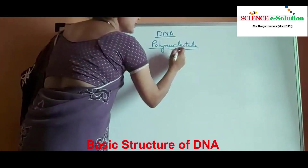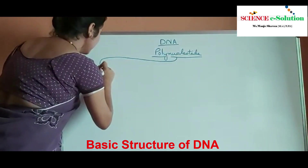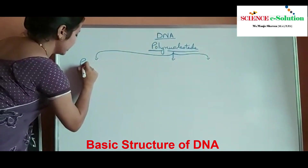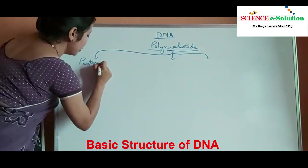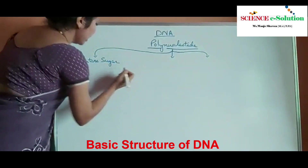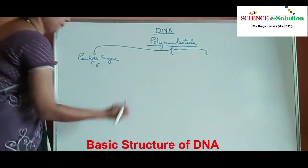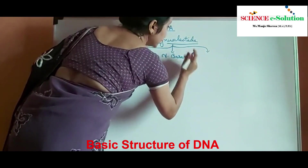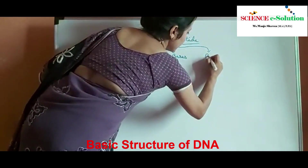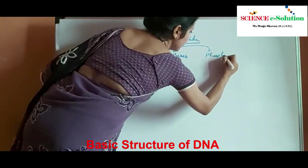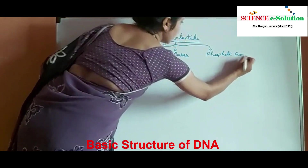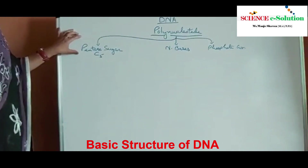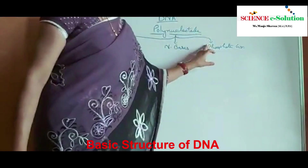This nucleotide itself is composed of three things. The first one is pentose sugar — pentose means a five carbon sugar. The second one is nitrogenous bases. And the third component of a nucleotide is a phosphate group. So the three things present in a nucleotide are a pentose sugar, a nitrogenous base, and a phosphate group.